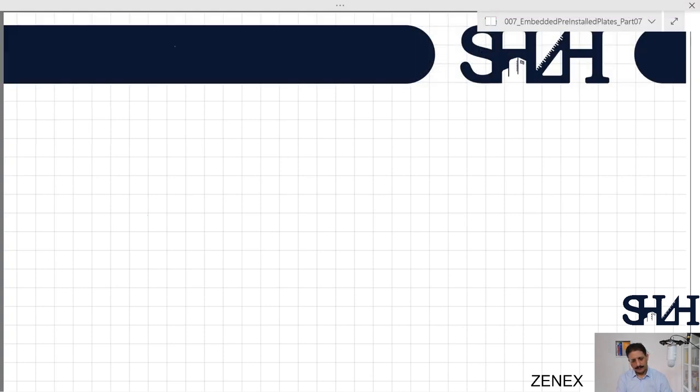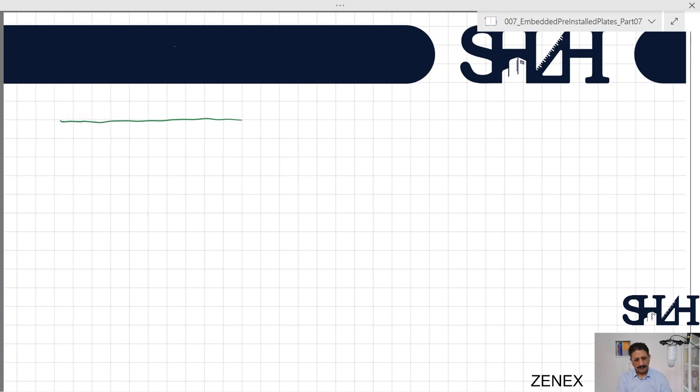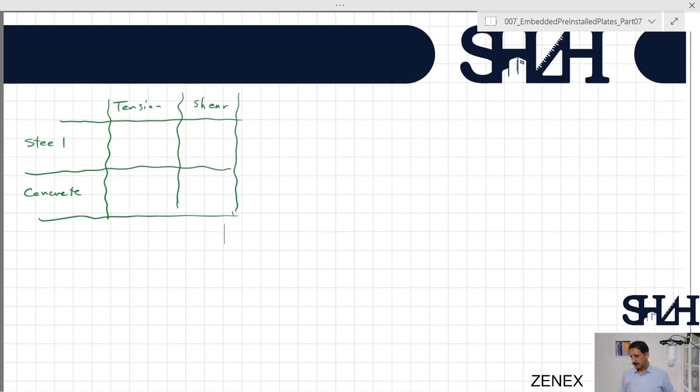It's good if we have all the utilization ratios for steel and concrete separately - steel, concrete, tension and shear. To recall from the end of video number four, we had all the values for tension: 26 percent in steel, 67 percent for concrete cone failure, 17 percent for the pullout, 48 percent for the splitting.